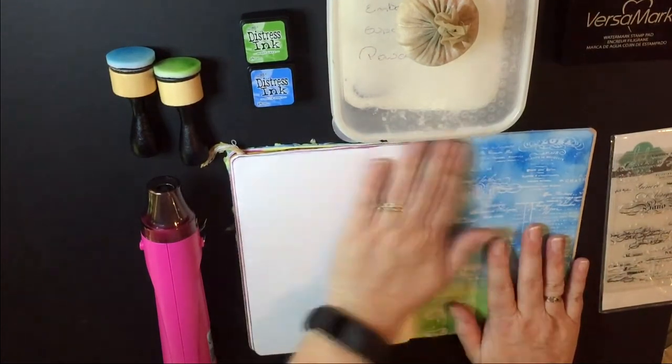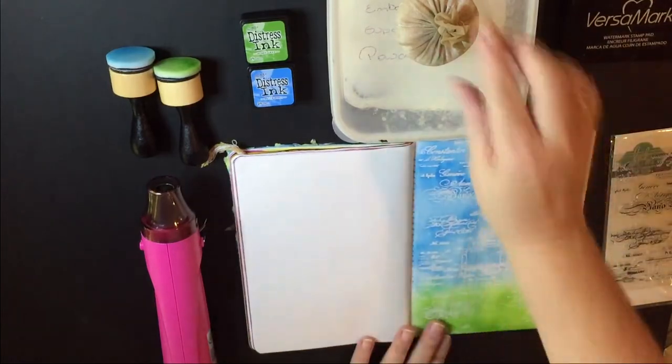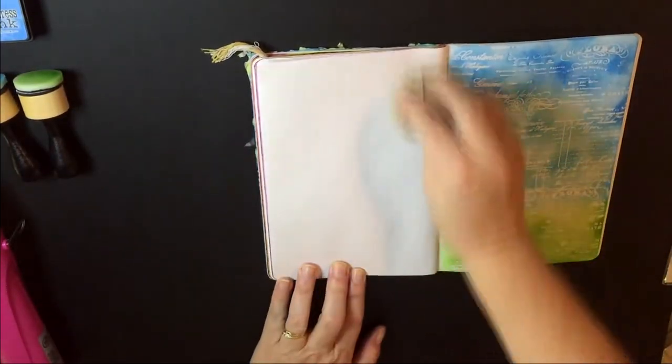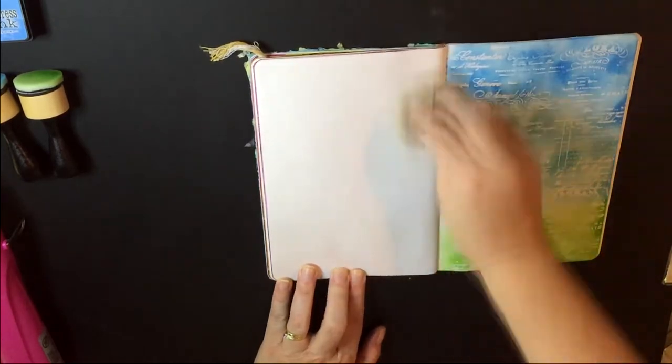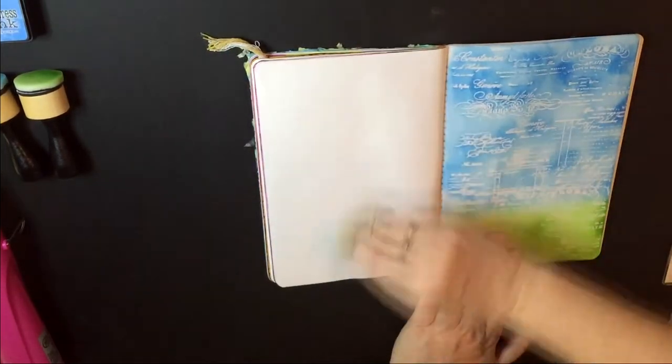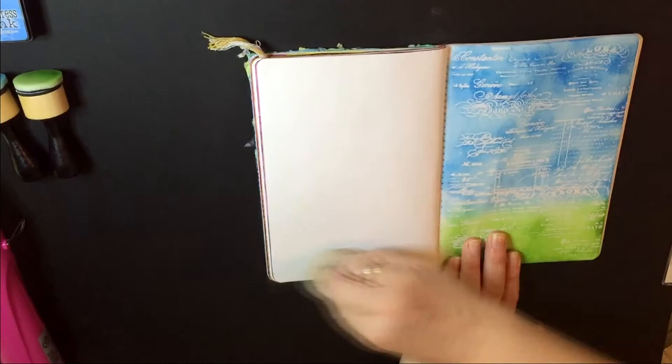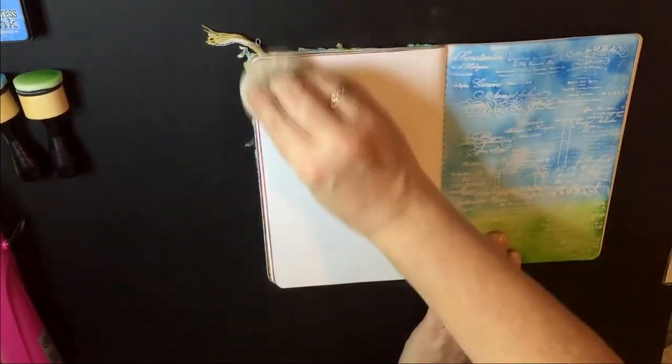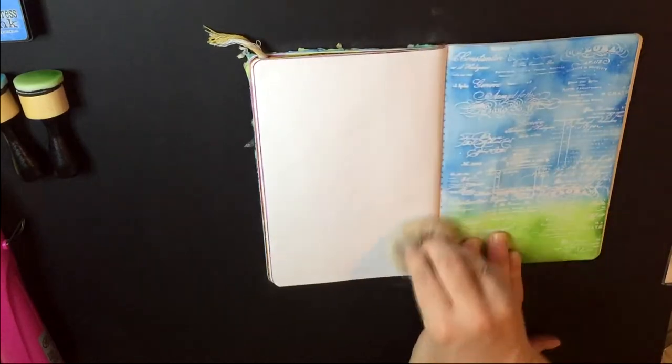So to begin with, we're going to get the embossing buddy. I'll just move all these out of the way. Now I'm going to rub this all over my page and what that's going to do is not let the powder stick where I don't want it to stick.